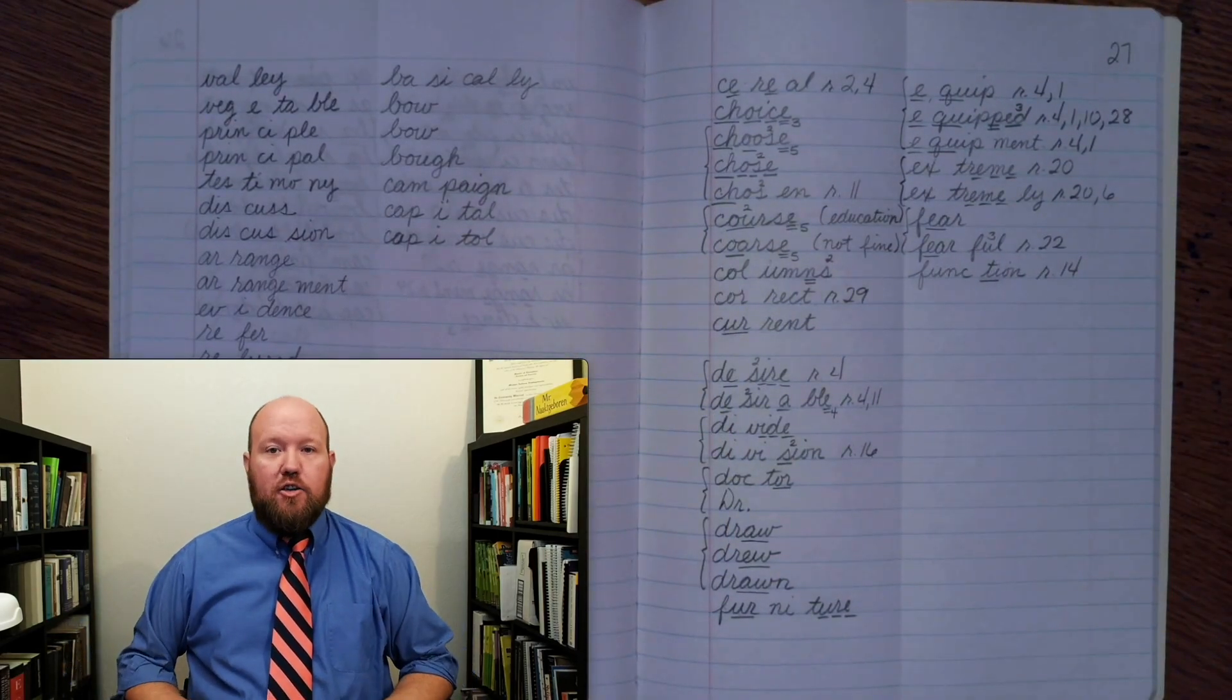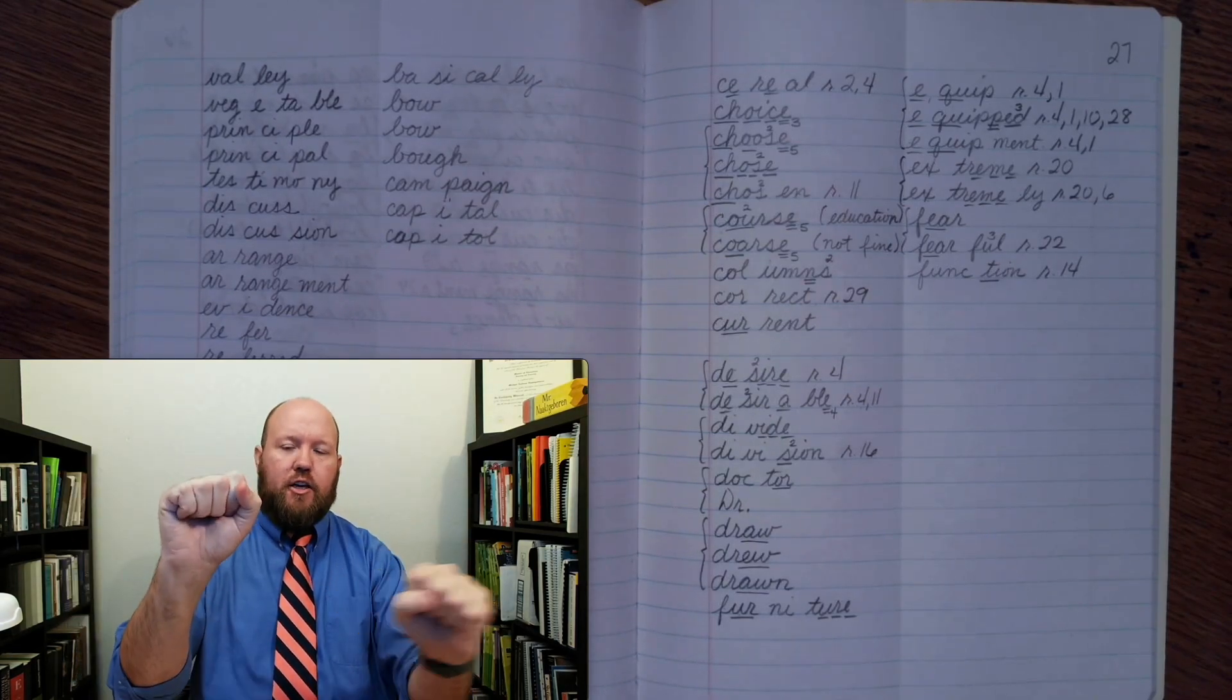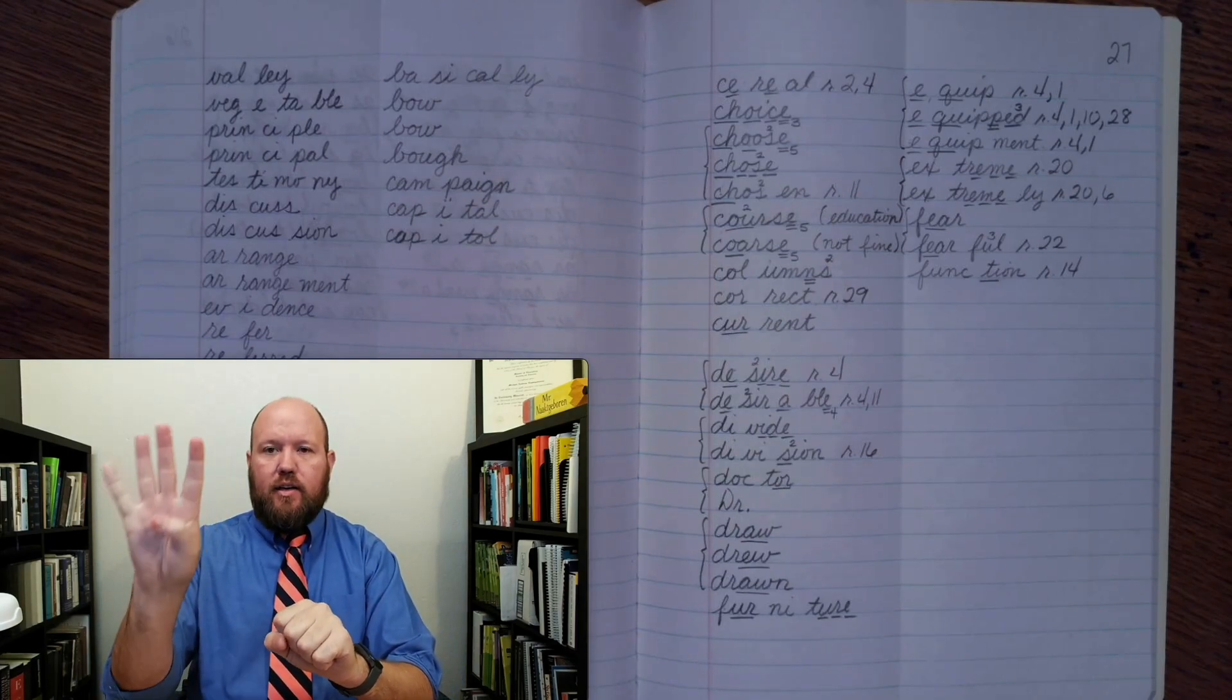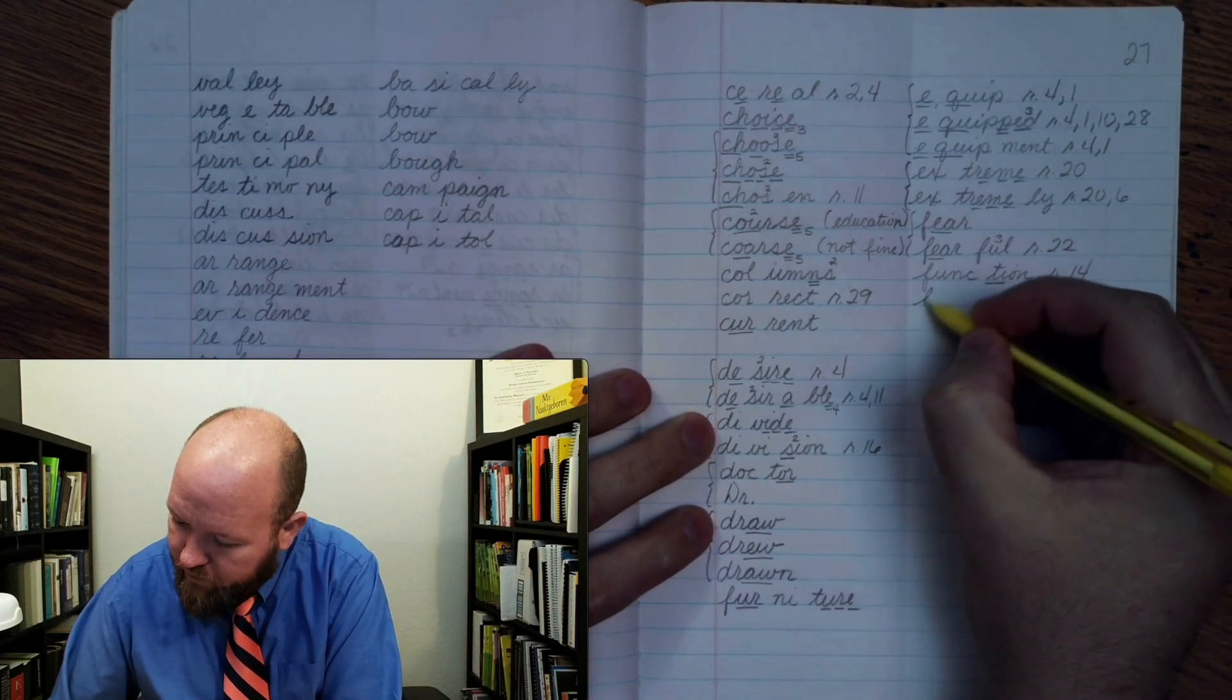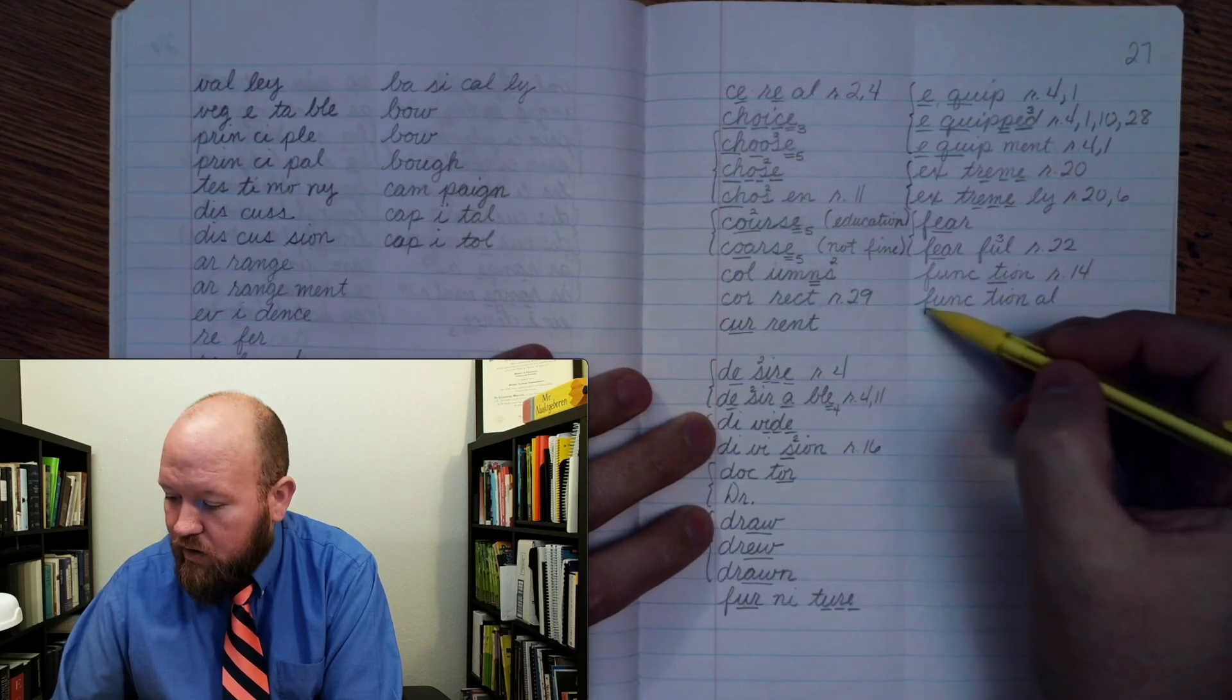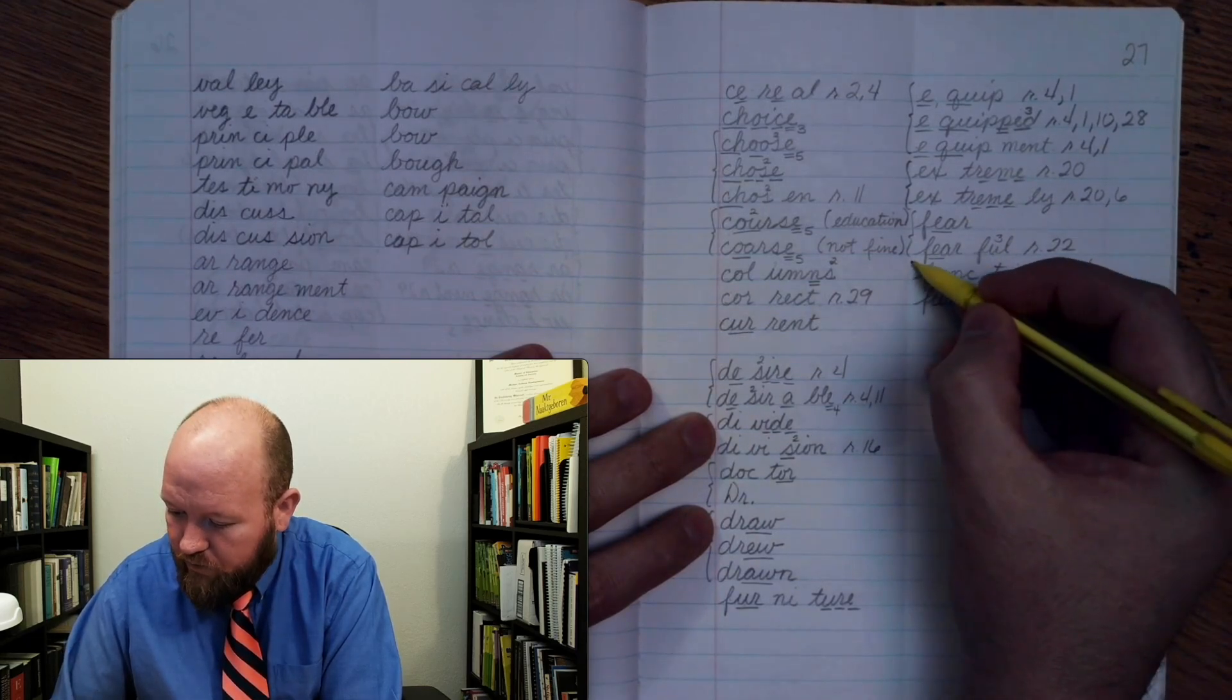The next word is functional. So if something works, it is functional. Functional, base word function, ending A L. I write function and A L to make the word functional. Func-tion-al. F U N C, T I O N, A L. Functional. F U N C, T I once rule 14, O N, A L. Functional.